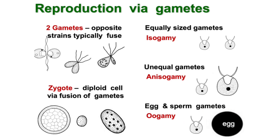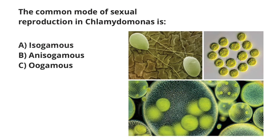The result of such fusion is a diploid zygote. Now we can return to our question. You know that this alga, chlamydomonas, may reproduce asexually through mitosis and sexually through meiosis. And because the gametes are of the same size, the correct answer is that the common mode of sexual reproduction in chlamydomonas is isogamous — Answer A. Subscribe and see you in the next video. Goodbye.